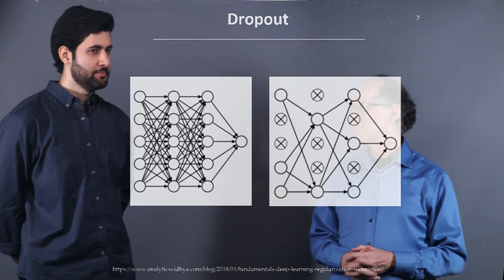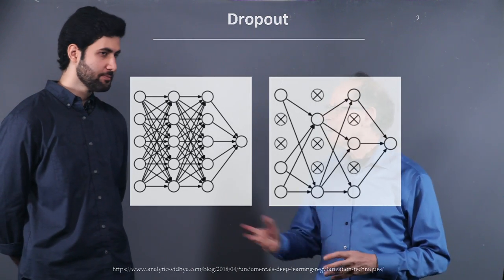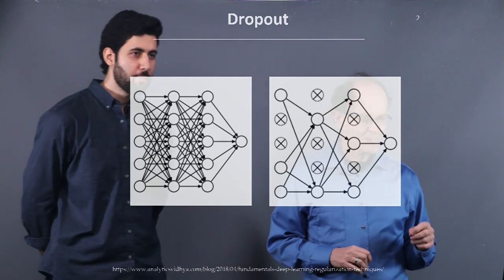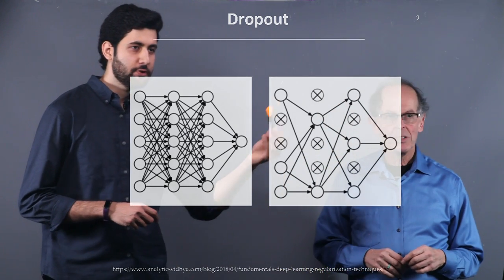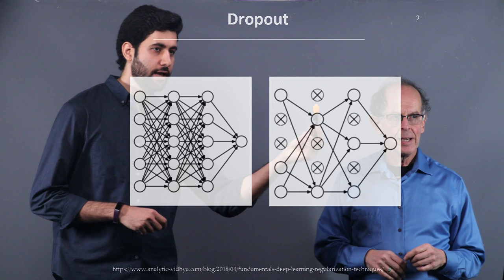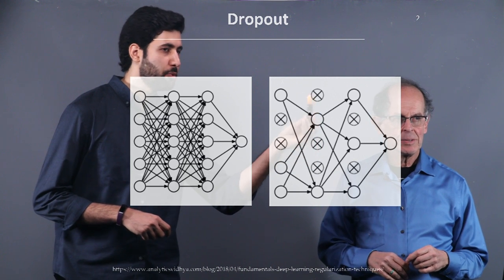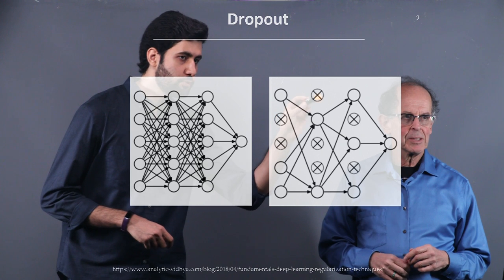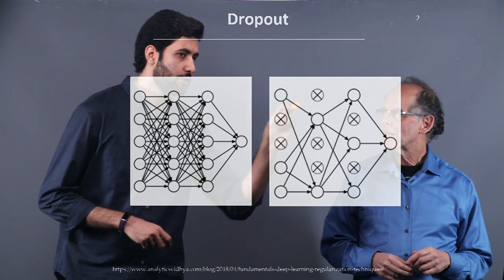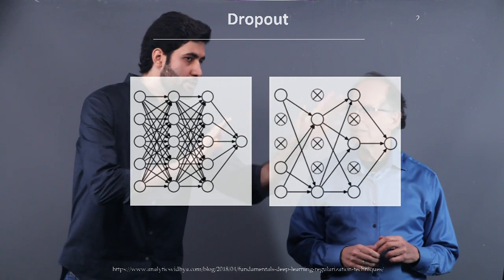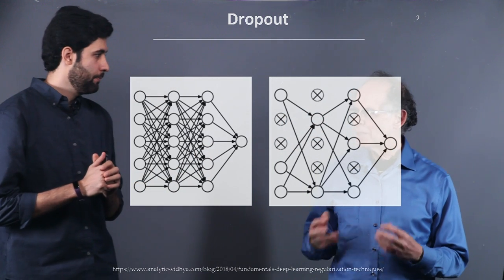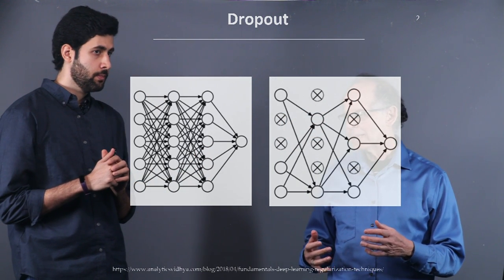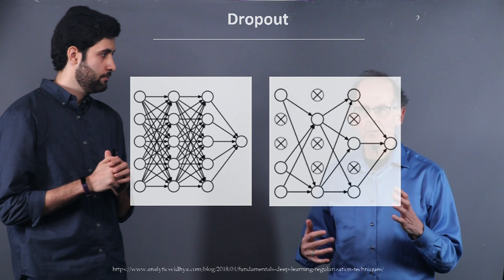Here's an example of dropout. Basically, in dropout, we go through each neuron and with some probability, we just remove that neuron and all the input and output connections to that neuron. We then train with this new network, so we have much fewer neurons to train, depending on the probability that we pick.